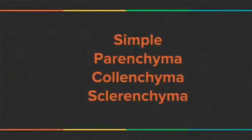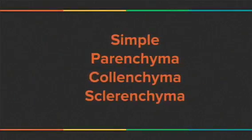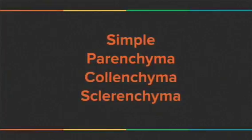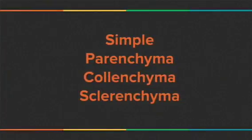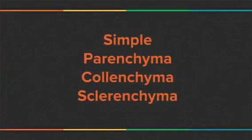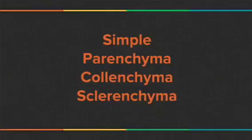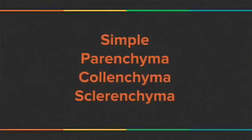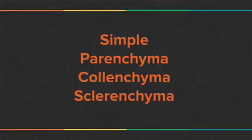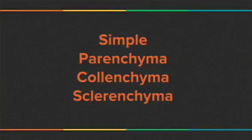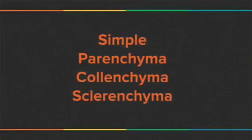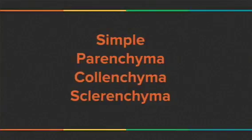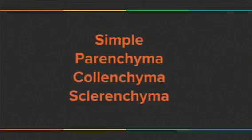Simple tissue consists of three types: parenchyma, collenchyma, and sclerenchyma. Parenchyma has large thin-walled cells. Collenchyma has elongated cells thickened at the corners. Sclerenchyma has long, narrow, and thick cells.